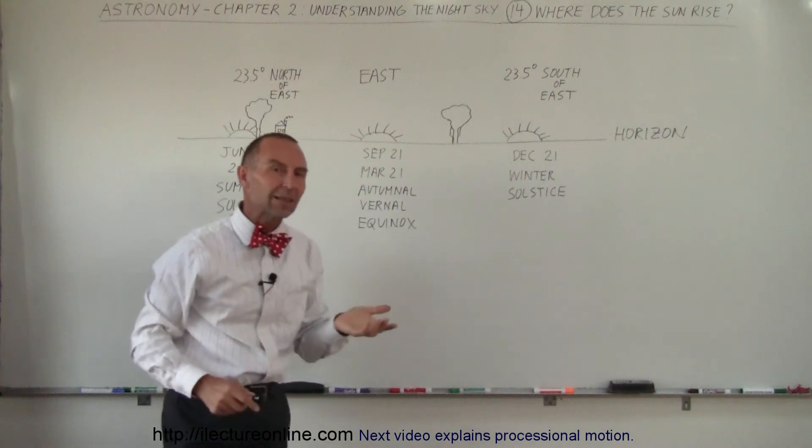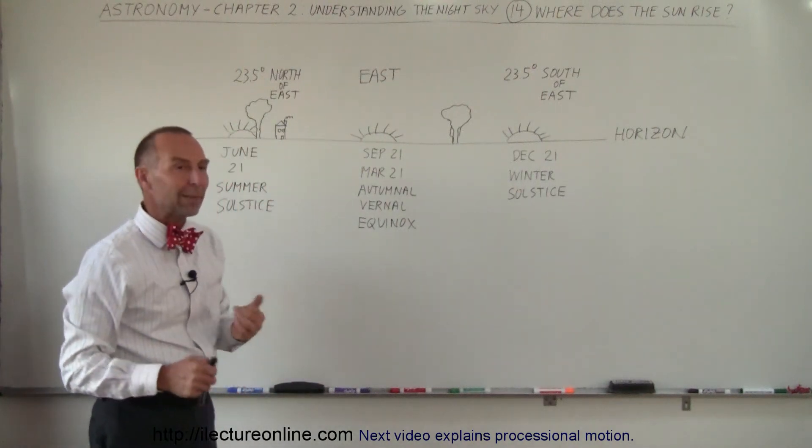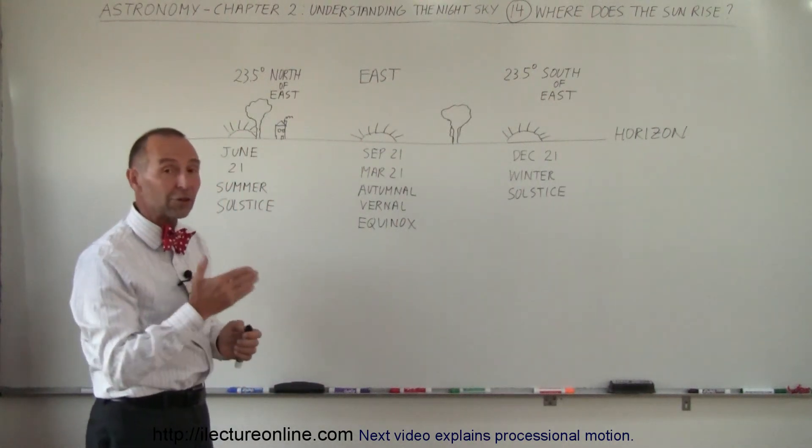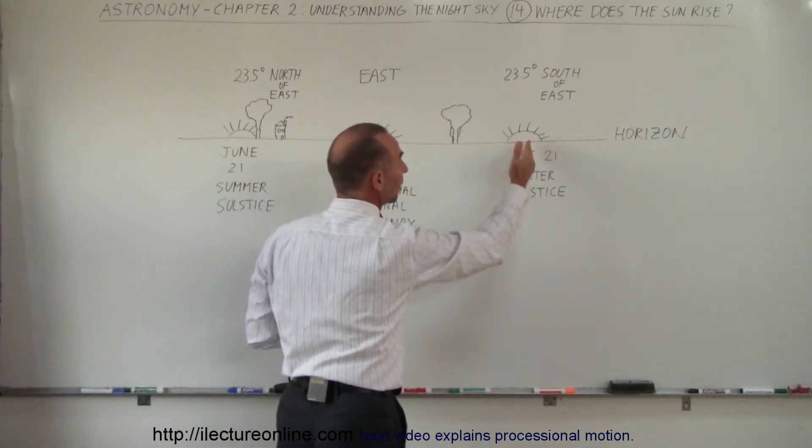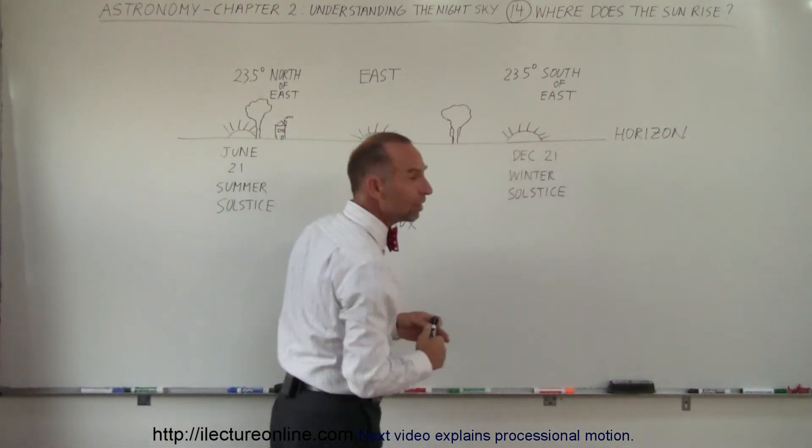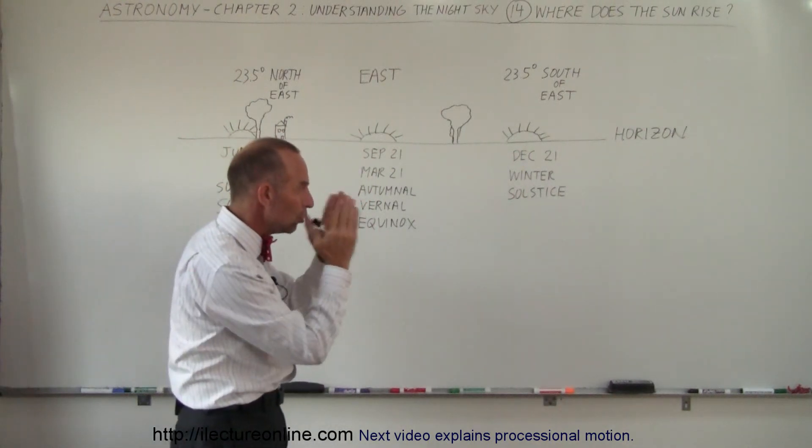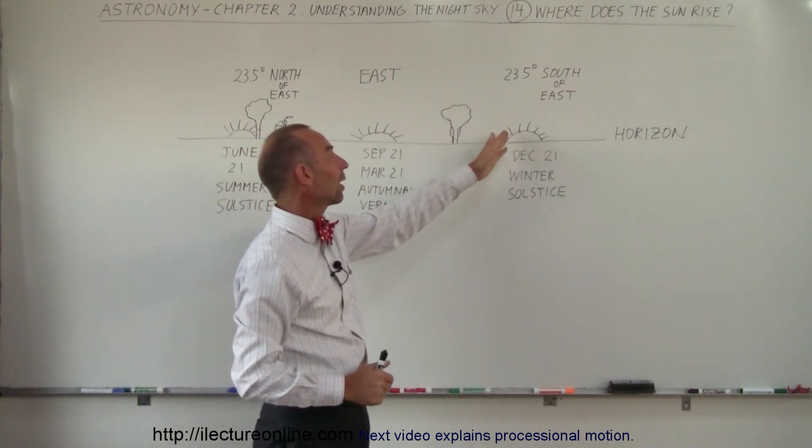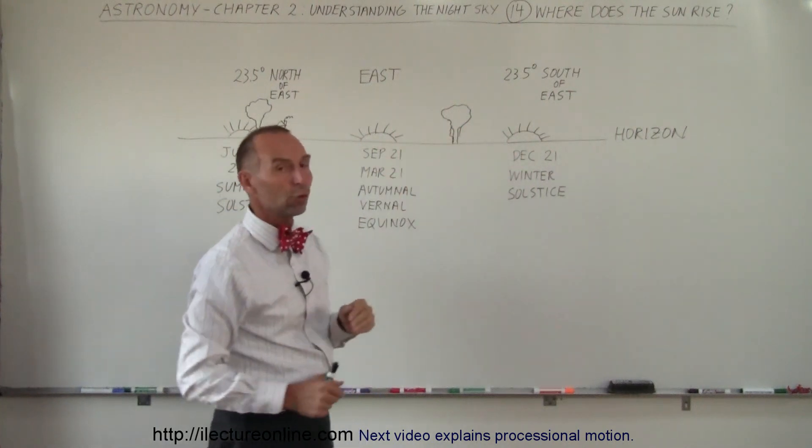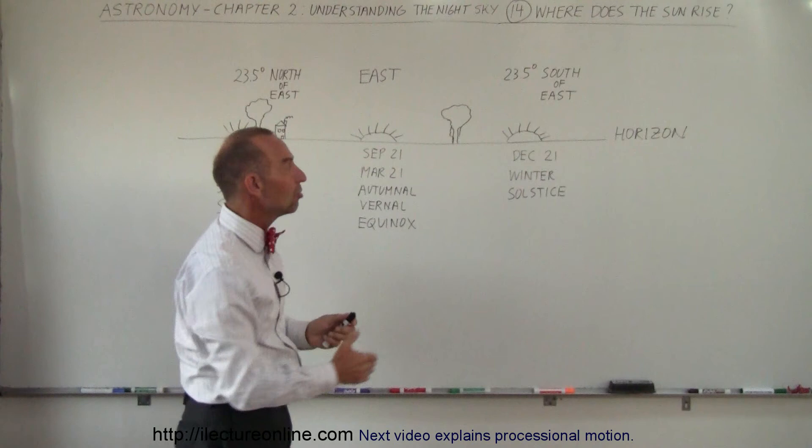People have been looking at this for many thousands of years, and they began to realize that that was a very special event. They realized that once the sun began to rise at that particular position, and sometimes they built special monuments or buildings to know that very position, they knew that after that the sun would begin to rise again further and further to the north, and then the season then would change.